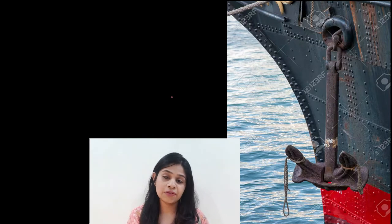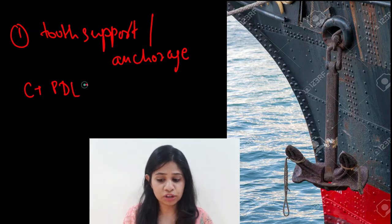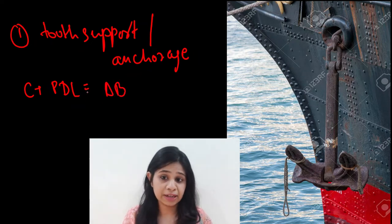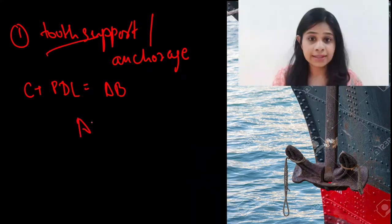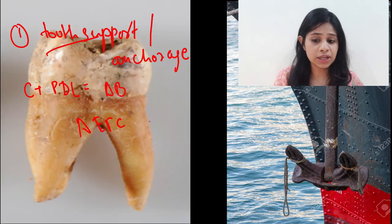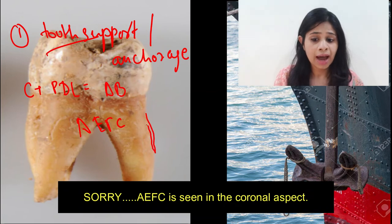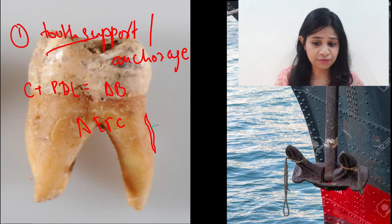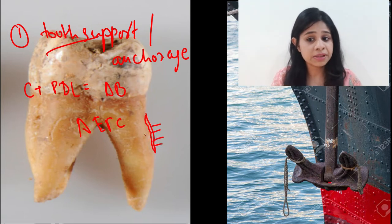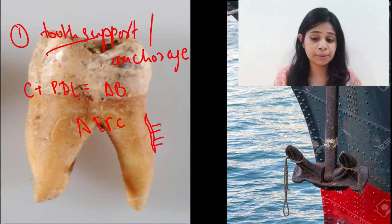In the last video we discussed the various types of cementum and saw its unique features. So let's see how each type of cementum facilitates different functions. The first function is tooth support and anchorage. The cementum tissue along with the periodontal ligament helps facilitate attachment of the tooth to the alveolar bone. The most suitable type for this function is the acellular extrinsic fiber cementum, usually seen in the middle aspect of the root.